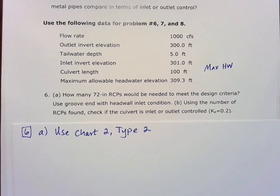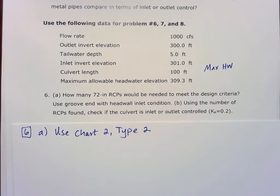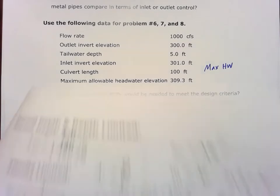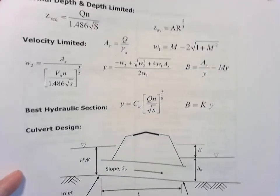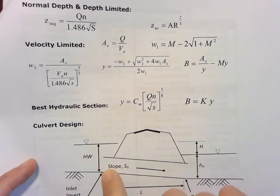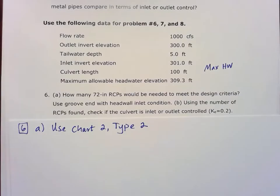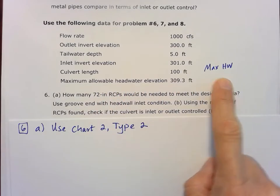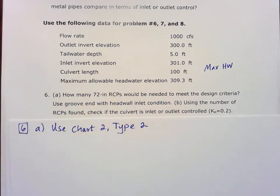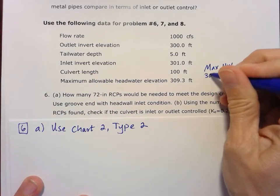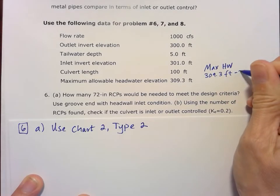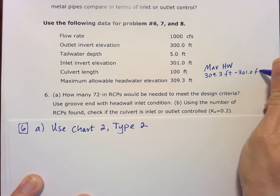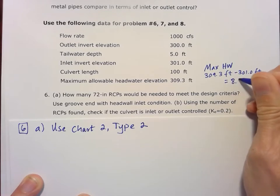In this case, it's 309.3 for a maximum elevation. So let's find out what that max headwater is. Remember from our formula sheet that our headwater is measured above that invert elevation. So if we have our headwater here, that is really the definition of that is the water depth that is above that invert elevation. So we're told a max allowable headwater elevation. So to figure out that max headwater, we have to subtract the invert elevation from it. So it's going to be that 309.3 feet minus 301.0 feet. So our max headwater is going to be 8.3 feet.